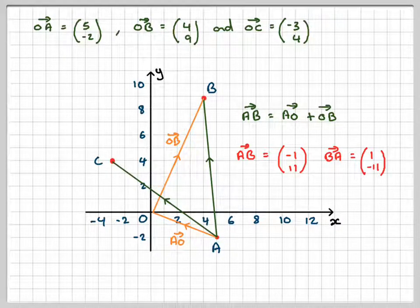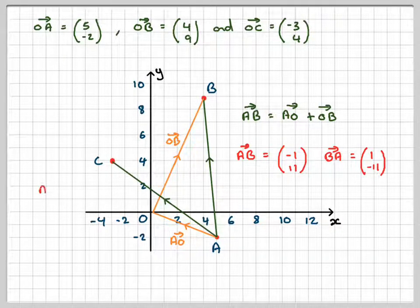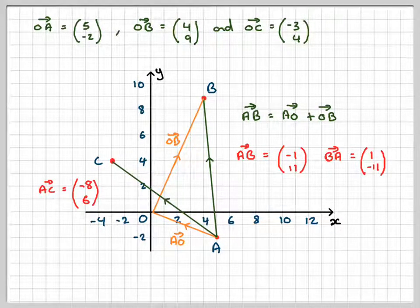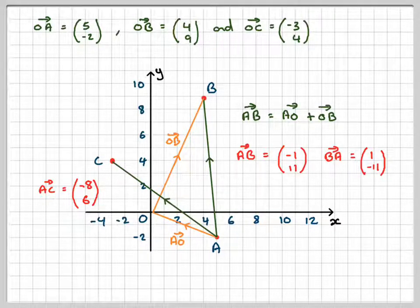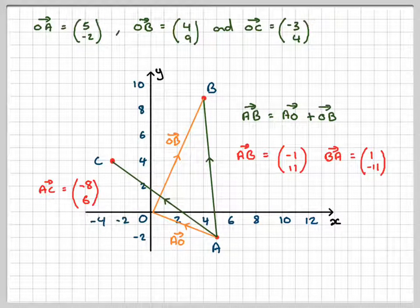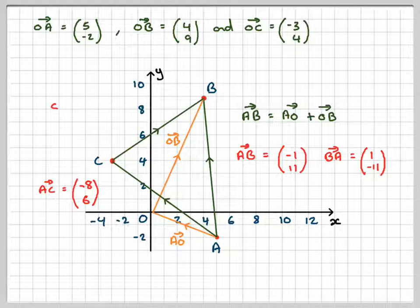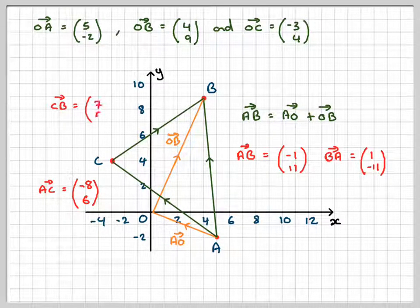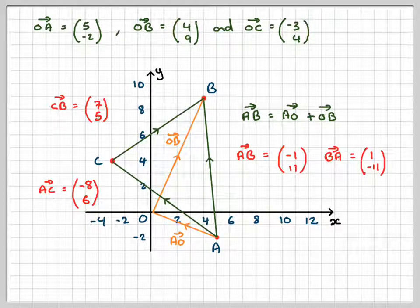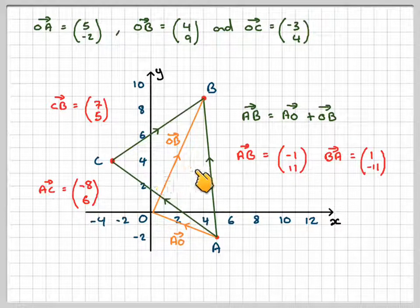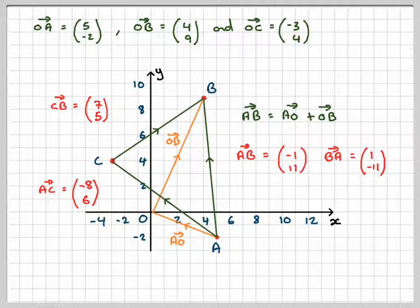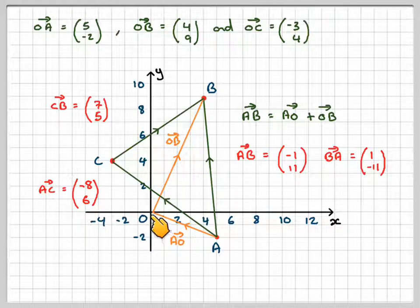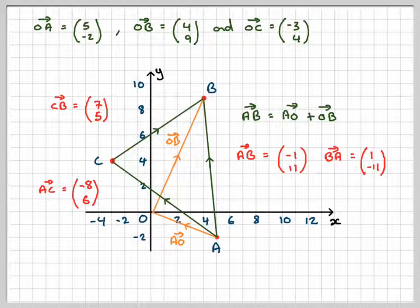AC was that vector, and we can see quite clearly that that is back 8 and up 6, like we got in our answer in the previous part. And we also had to calculate vector C to B, which is going to be (7, 5). So again, that's along 7 and up 5. But remember, we could have done C to O, and then from O to B.